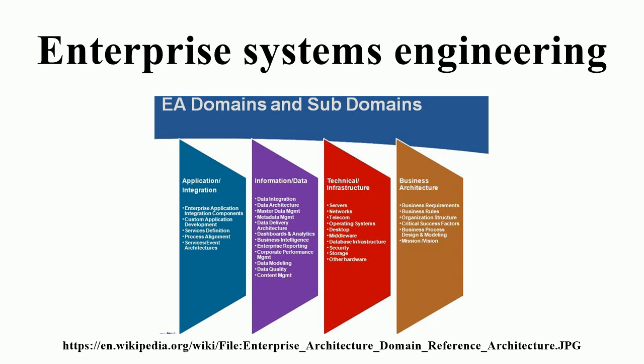There are four important elements in order for enterprise systems engineering to work. These include development through adaptation, strategic technical planning, enterprise governance, and ESE processes.